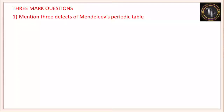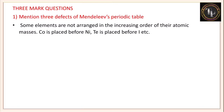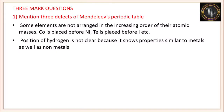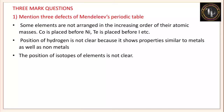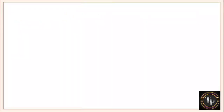Mention three defects in Mendeleev's periodic table. First, some elements are not arranged in the increasing order of their atomic masses — cobalt is placed before nickel, and tellurium is placed before iodine. Second, the position of hydrogen is not clear because it shows properties similar to both metals and non-metals. Third, the position of isotopes of elements is not clear.